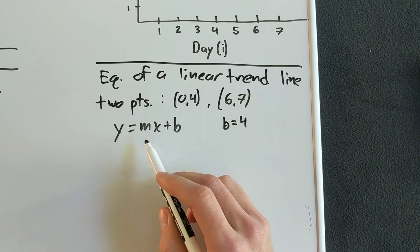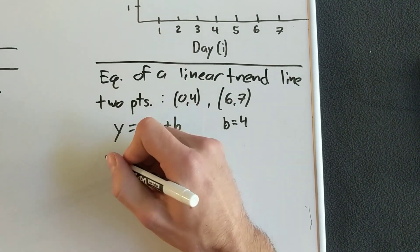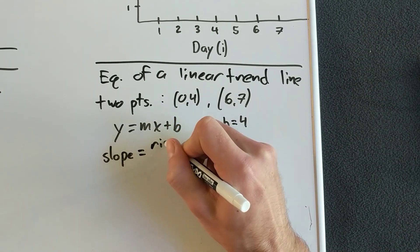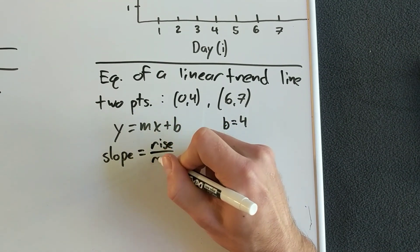To find m, or the slope, lots of great ways to do this. I like to think about slope as rise over run. This is just one method.